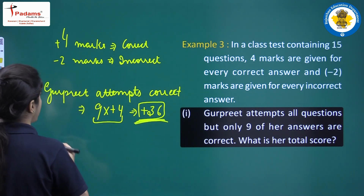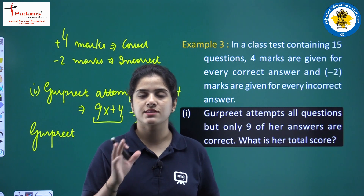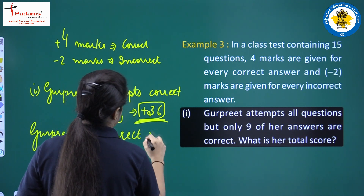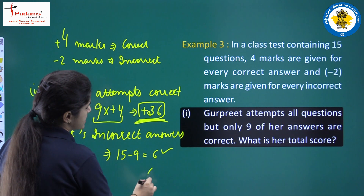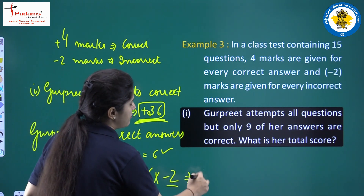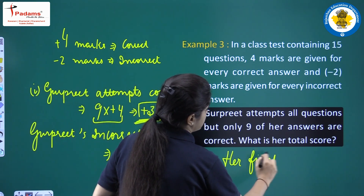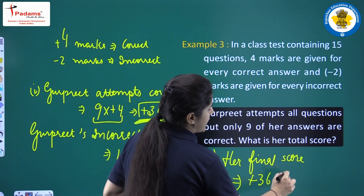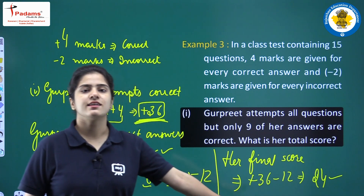These marks are for her correct answers. She attempted all 15 questions and only 9 are correct, so incorrect answers are 6. For 6 incorrect answers at minus 2 marks each: 6 into 2 equals 12, and plus times minus is minus, so she loses 12 marks. Her final score is plus 36 minus 12, and 36 minus 12 equals 24. This is her total score.